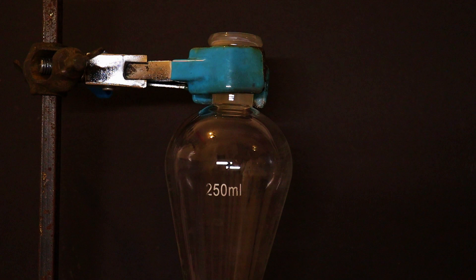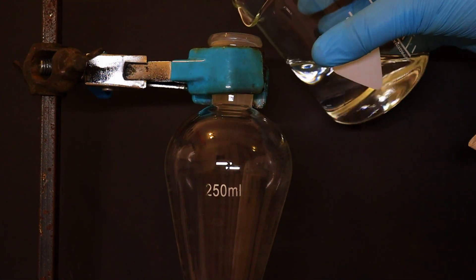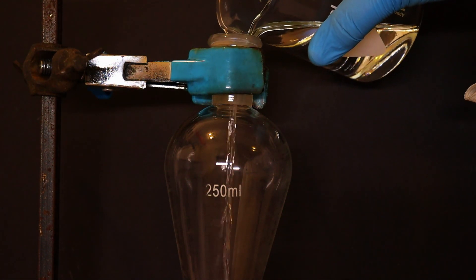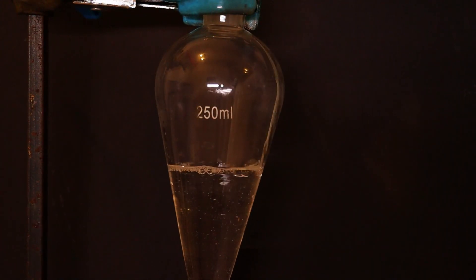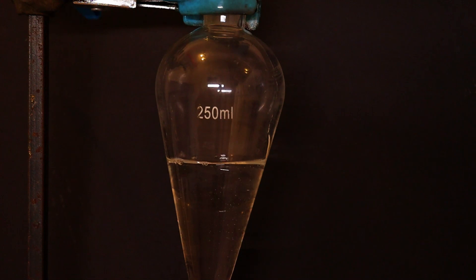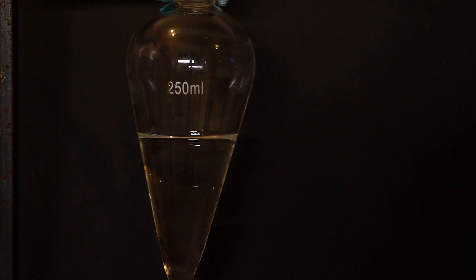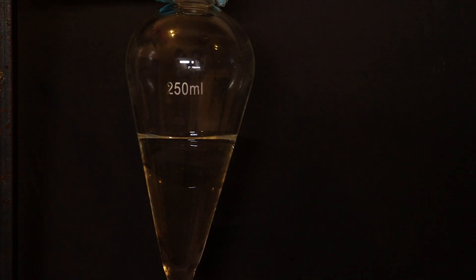Then, we need to take a 250 milliliter separatory funnel and pour in 85 milliliters of concentrated hydrochloric acid, and then we need to pour in that 25 grams of tertiary butanol that we measured out earlier.